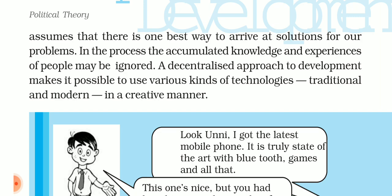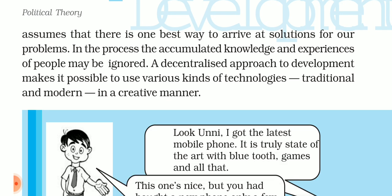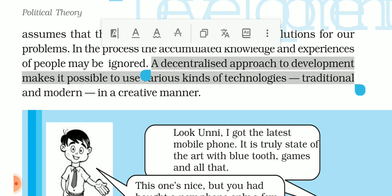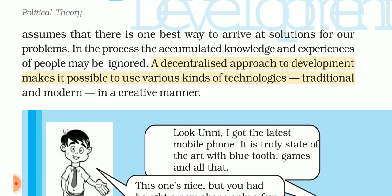But a decentralized approach to development makes it possible to use various kinds of technology — traditional and modern — in a creative manner. If you do it in a top-down way, which resembles a dictatorship, you will not benefit from all of these possibilities. But the decentralized approach means that power is not concentrated in one place; power is completely divided.